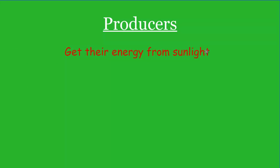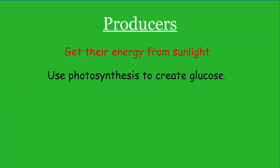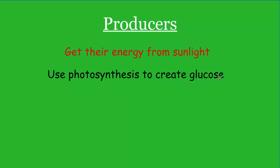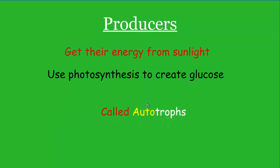Let's start with producers. Producers are organisms within an ecosystem that get their energy from sunlight. They don't get it directly from sunlight — they need a process to convert the sunlight into some chemical form of energy. That process is called photosynthesis and it creates a molecule called glucose, which gets broken down and released as energy for living things to use. Because they can do that by themselves, they produce their own energy, so they're called producers. We can also call them autotrophs — auto means self, troph means to feed, so they're self-feeders.